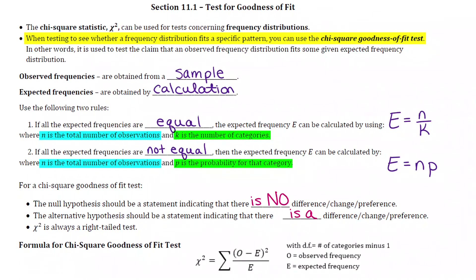Chi-square is always a right-tailed test. The formula for chi-square is capital sigma — the sum of the observed frequency minus the expected frequency, that quantity squared, then divided by the expected frequency. You do that for each category and sum them all up to get your chi-square. We'll put our frequencies into lists in our calculator to execute that formula. Degrees of freedom for the goodness of fit test is the number of categories minus one.